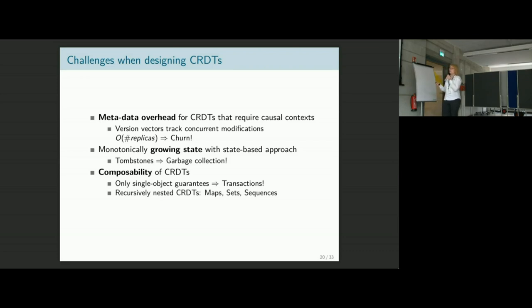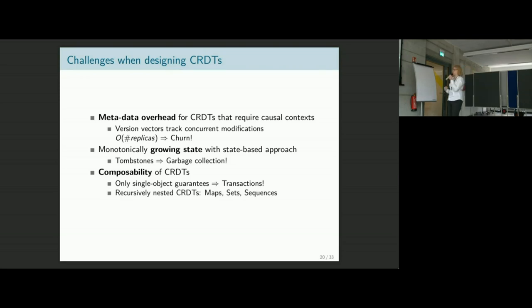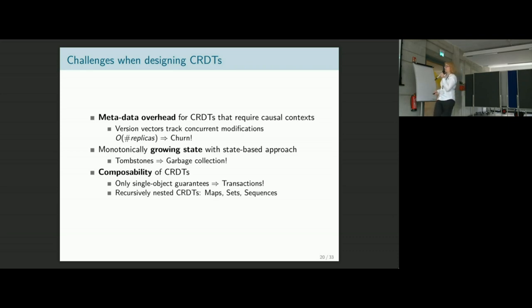The CRDT guarantees typically only hold for a single CRDT — if you talk about different CRDTs interacting, you typically don't have any guarantees. What we looked at was wrapping things into transactions, or making the CRDT bigger using recursively nested CRDTs such as maps, sets, or sequences, where each entry could itself be a CRDT and then guarantees apply on the enclosing map.